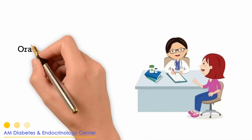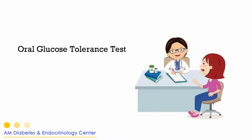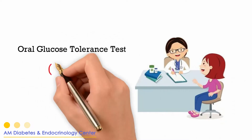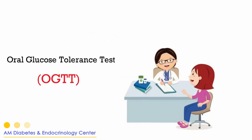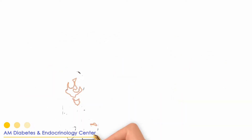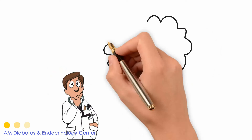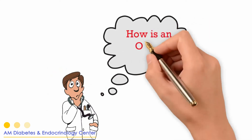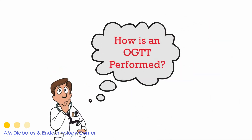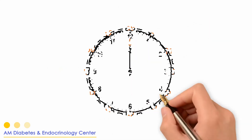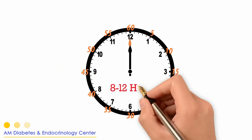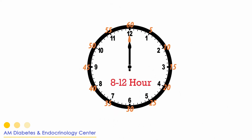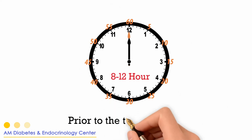4. Oral glucose tolerance test, OGTT. How is the oral glucose tolerance test performed? 1. It requires an 8 to 12 hour fast prior to the test procedure.